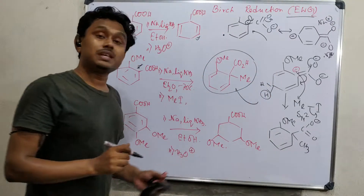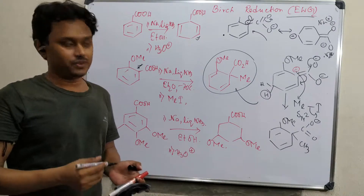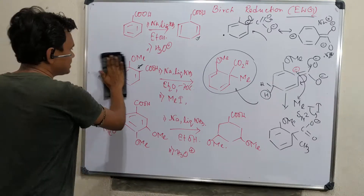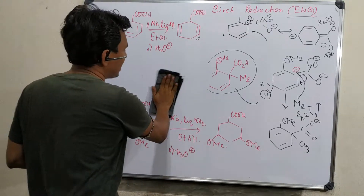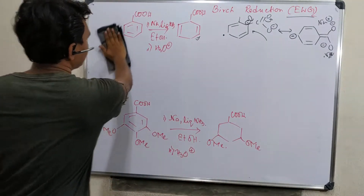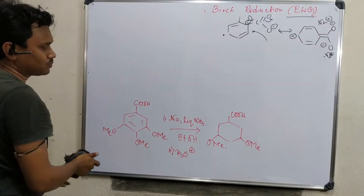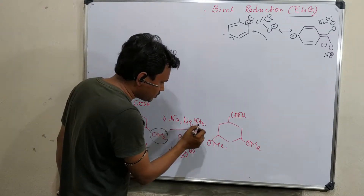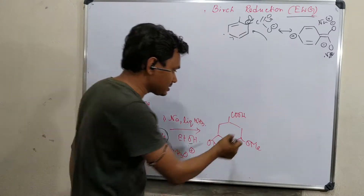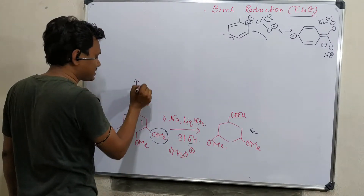Keep this example in mind because apparently it's easy but it may be given to confuse you. Let us discuss another tricky example: the trimethyl ether of gallic acid is given, which undergoes Birch reduction to produce a completely reduced product. The question is how. The reaction medium is sodium in liquid ammonia and ethanol — standard Birch reduction conditions. The surprising thing is that complete reduction occurred.